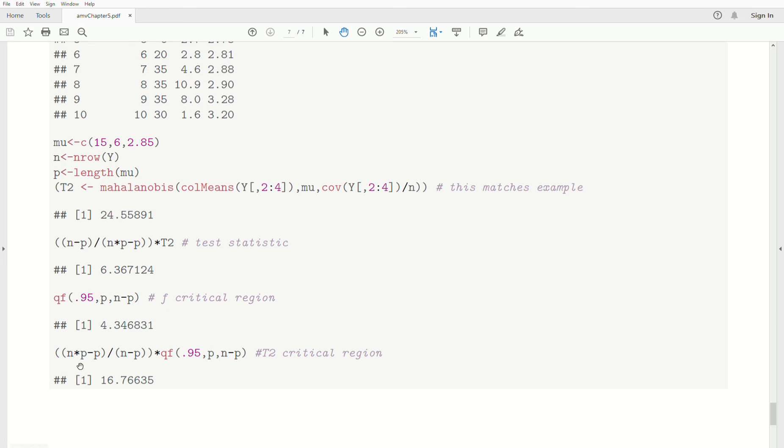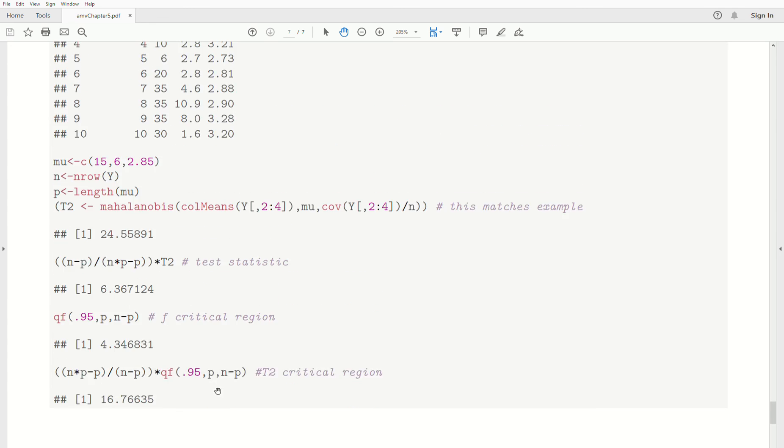Just to show you that you can calculate Hotelling's T squared critical region using this F distribution, we just take it times this constant, which is times this critical region, and we do get the 16.766. So, they are related. I'm right at 11 minutes, so I'm going to call this video done.